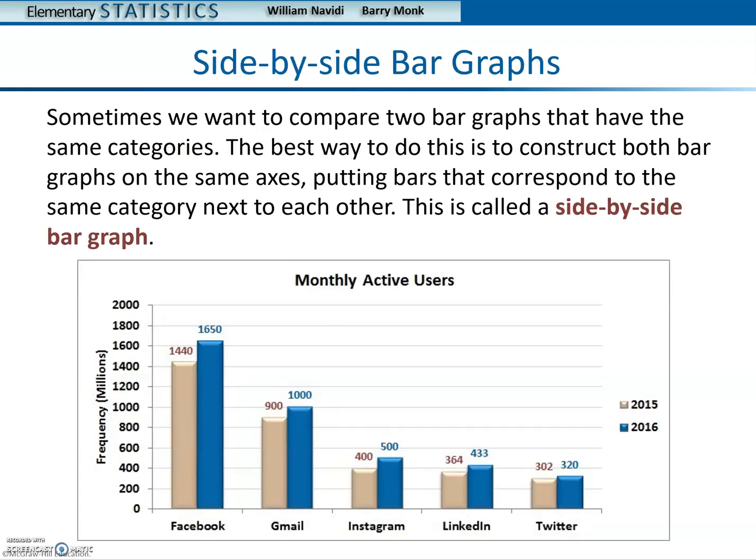Side-by-side graphs. Sometimes we want to compare two bar graphs that have the same categories. The best way to do this is to construct both bar graphs on the same axes, putting bars that correspond to the same category next to each other. This is called a side-by-side bar graph.